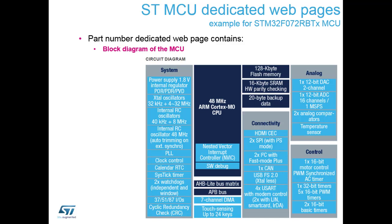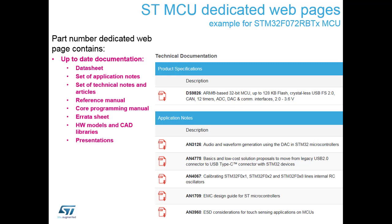Once you know how many pins you need, you select which particular sales type you want and it takes you to a specific product page. This is the product page for the F072 RB, which is the component on the Nucleo board we'll be using for the hands-on. Right at the top of that page you can instantly see a link straight to the datasheet. Remember this is the RBTX package, so as you go to smaller packages not all features will be available due to pin count limitations. The technical documentation section includes the datasheet, application notes, technical articles, reference manuals, core programming manuals, errata sheets, hardware and CAD models, and marketing presentations.